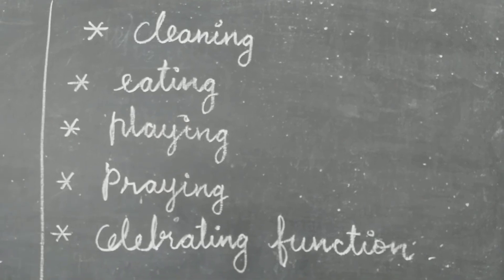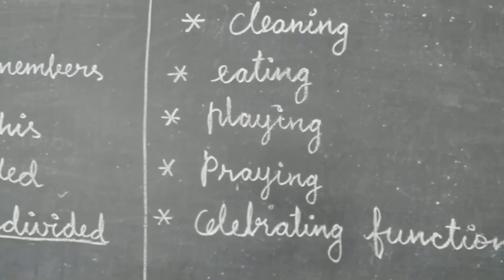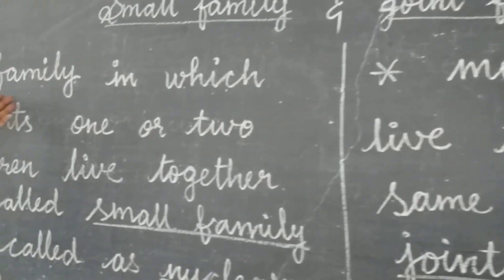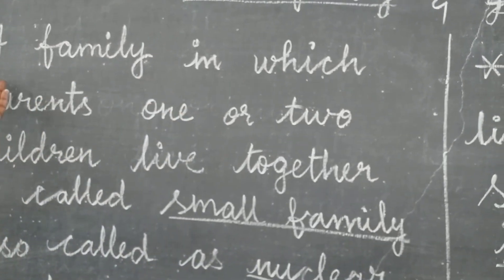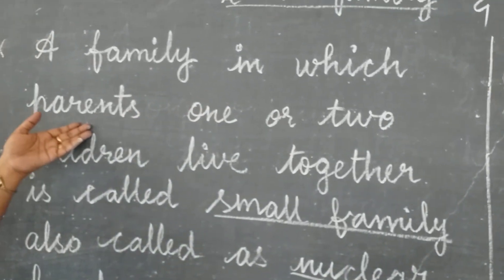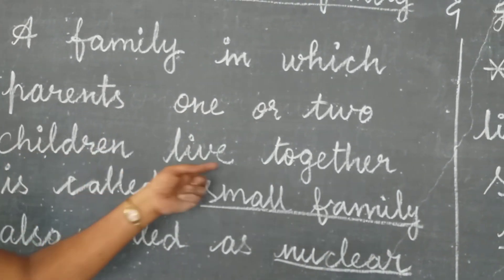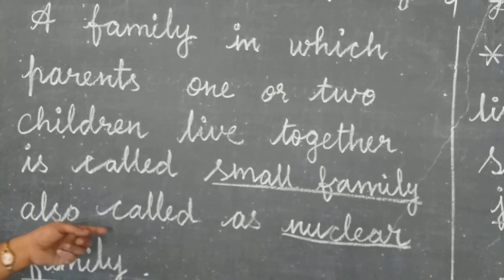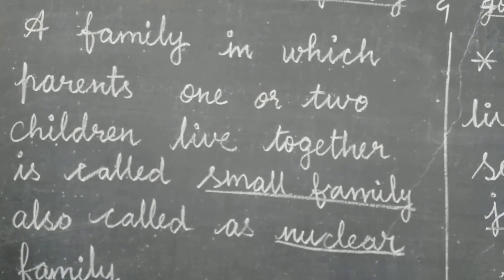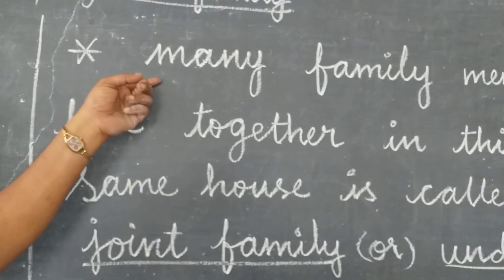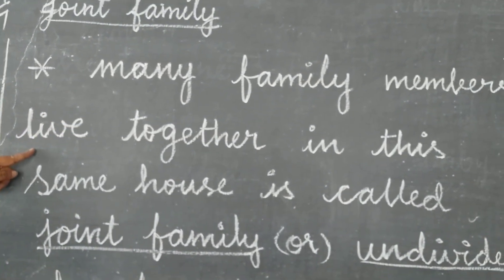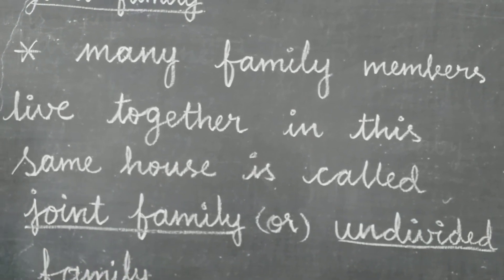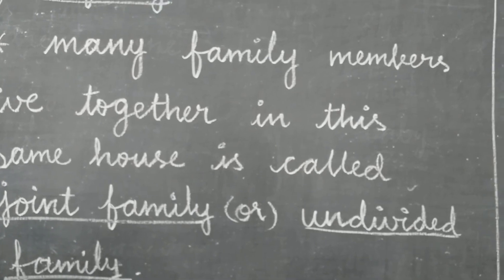Let us recall now. Small family: a family in which parents and one or two children live together is called small family, also called as nuclear family. Joint family: many family members live together in the same house, called joint family or undivided family.